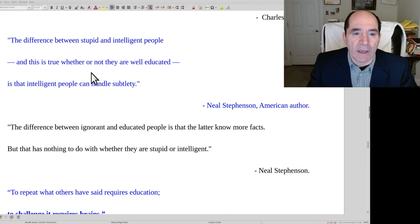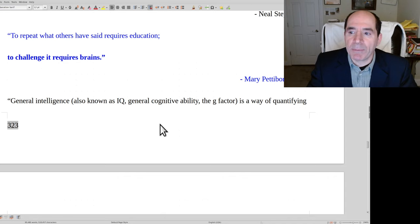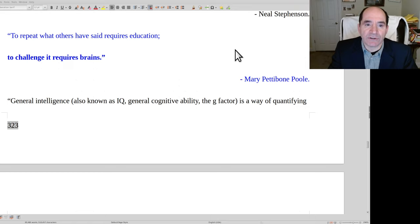Neil Stephenson, the author: the difference between stupid and intelligent people, whether or not they are well educated, is that intelligent people can handle subtlety. That's a sign of somebody who can have an intelligent conversation. They can handle the nuance, being contradicted. He continues: the difference between ignorant and educated people is that the latter know more facts, but that has nothing to do with whether or not they are stupid or intelligent. Mary Pettibone Poole: to repeat what others say requires education. To challenge it requires brains. The smartest persons, like somebody in medicine who's going to turn something upside down, that takes a lot of brains to do.